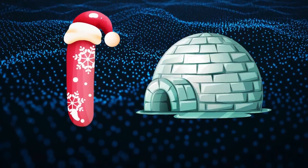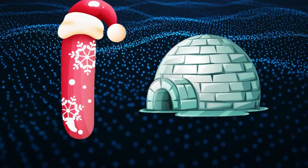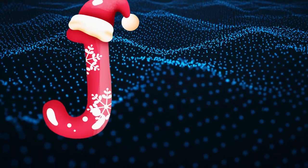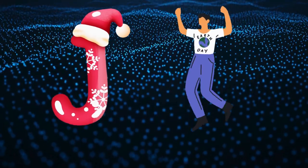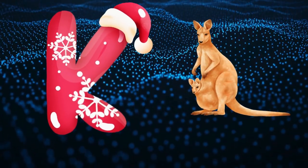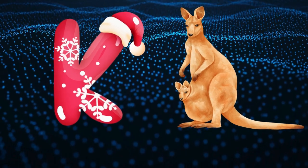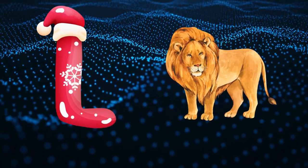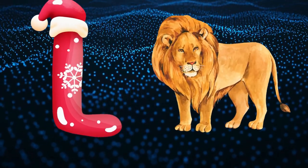I is for igloo, i-i-igloo. J is for jump, j-j-jump. K is for kangaroo, k-k-kangaroo. L is for lion, l-l-lion.